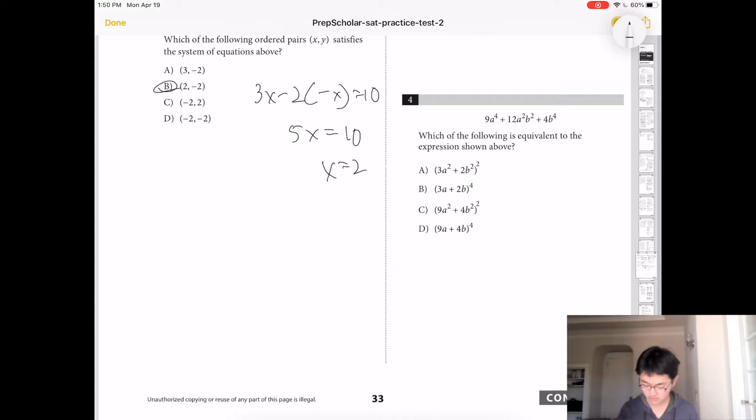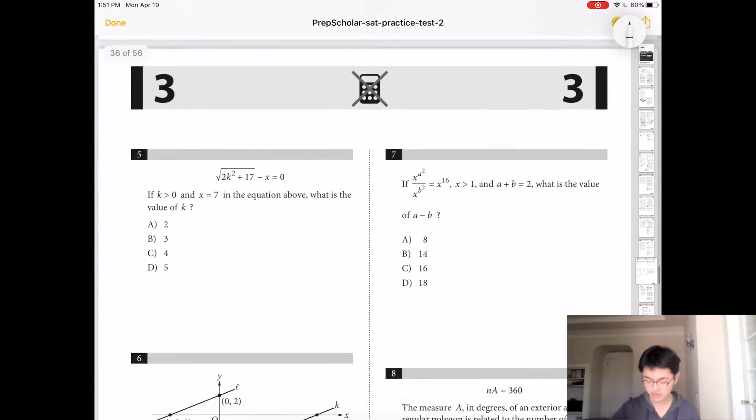Number 4, which of the following is equivalent to the expression shown above? So if you square one of these numbers, it would be 4b to the fourth power. The only one that fits that description is A. And also you could just do 9a fourth plus 12a squared b squared plus 4b to the fourth power.